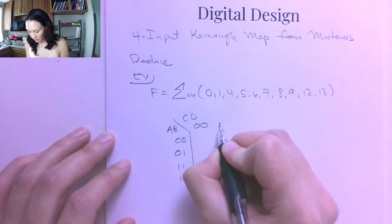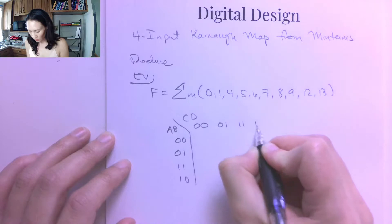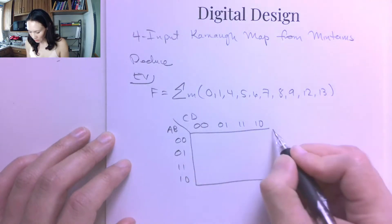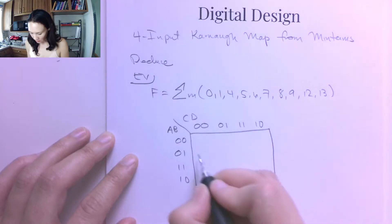For CD, 0, 0, 0, 1, 1, 1, 1, 0, also in gray code. We have to do that so that there's only one bit change between each of the numbers.